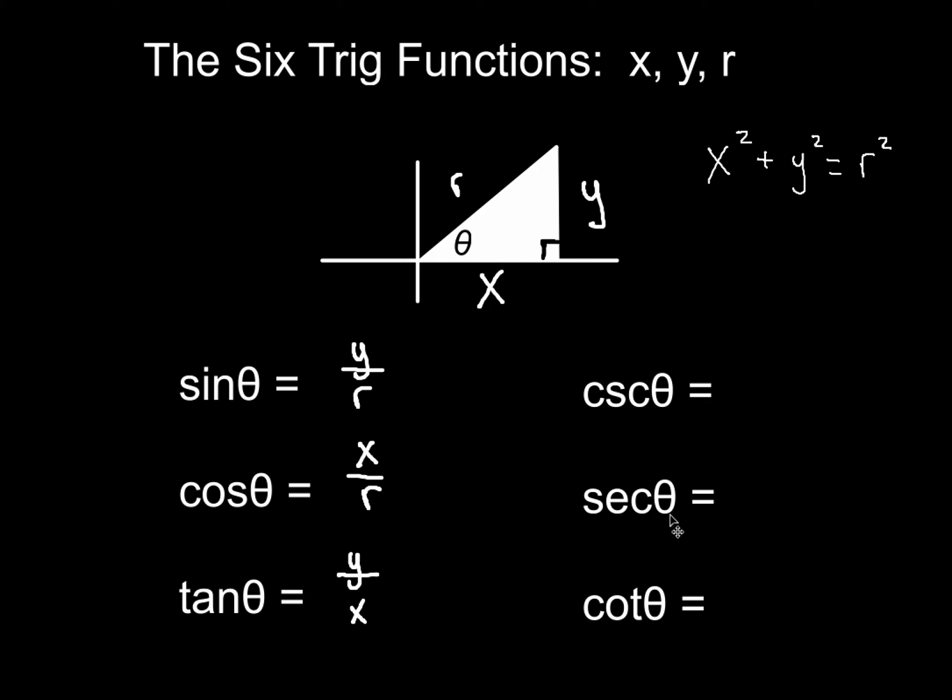Now, cosecant, secant, and cotangent, they're just the reciprocals of sine, cosine, tangent. So you could find those very quickly by just taking the reciprocal of each one of those. That's all you've got to do when you work with the six trig functions involving x, y, and r to find missing sides or to set up trig ratios. So let's go ahead and practice a couple of examples.